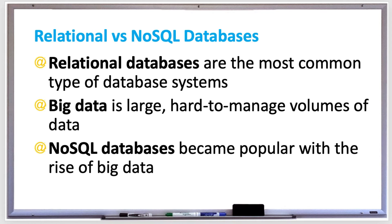Relational database systems were not initially designed for big data, and that caused many non-relational systems to become popular. The most popular type of these non-relational systems is called a NoSQL database, which stores data as key-value pairs typically in memory and is optimized for big data. Although the name NoSQL suggests that it doesn't support SQL, most NoSQL databases have added support for SQL, so now NoSQL means 'not only SQL'.